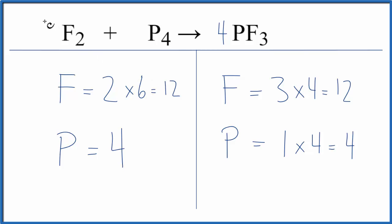So two times six gives us the 12. That matches this 12 here. Phosphorus atoms, those are the same. This equation is balanced.